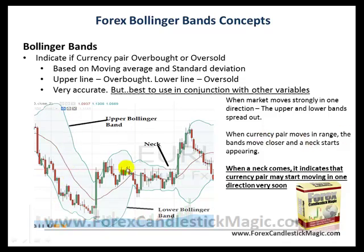But when the currency pair moves in a range, the Bollinger Bands close in and they start forming some kind of neck. If you look here, this area is quite broad, but gradually the Bollinger Bands are contracting, forming a neck. So when a neck is found, it is typically considered that the currency pair will start moving in a particular direction very soon. As you can see here, the Bollinger Bands formed a neck and after that very shortly it started moving in this direction.